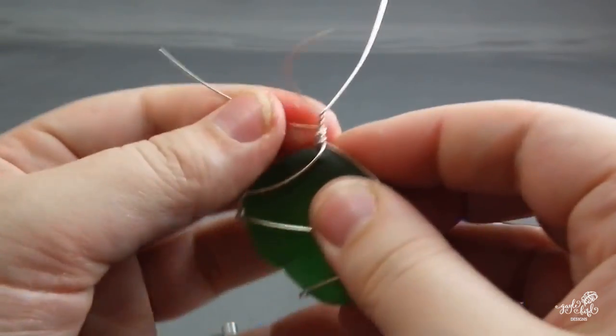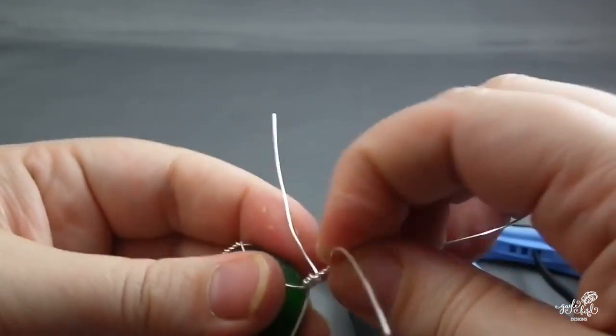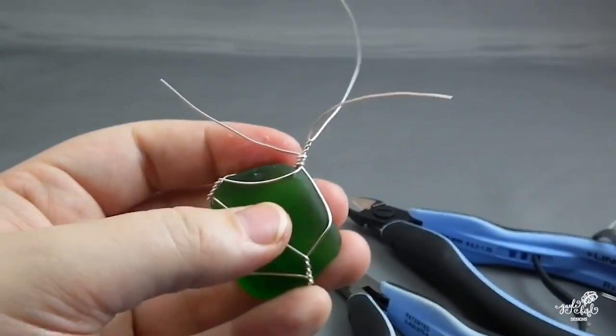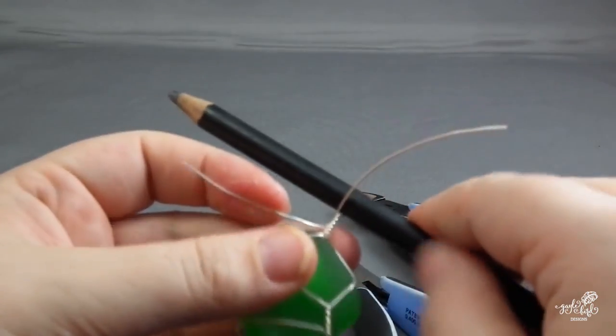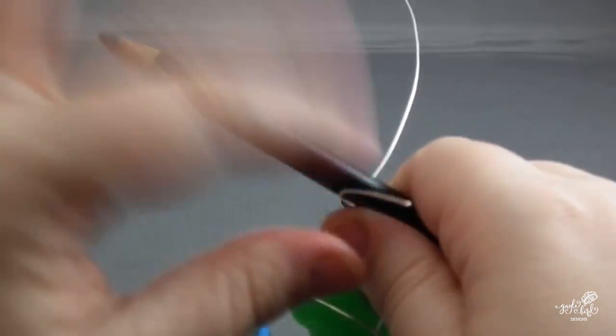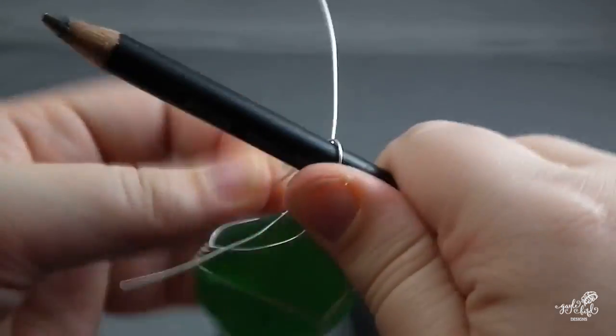Now we need to make a bail in order to hang this properly on a chain or ribbon. I have bail making pliers but you can totally do this with just a smooth barrel pencil. First you want to point the two bail wires opposite one another, one pointing to the front and one to the back. Take your pencil perpendicular to the wires the same way that a chain would go. Push it into the V of the wires as far as you can.